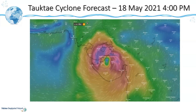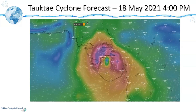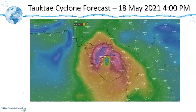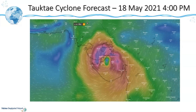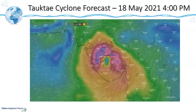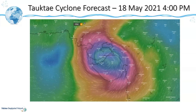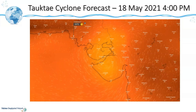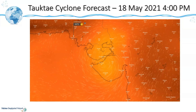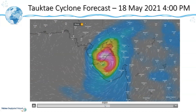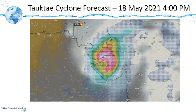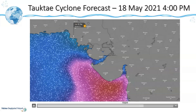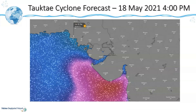Now let's see the forecasted parameters on 18th May at 4 p.m., when the cyclone will be closest to Karachi. As we can see, the wind speed will be 8 knots while the wind gust speed will be 20 knots, and the temperature will be 33 degrees centigrade. There will be no rain, but it will be 65% cloudy, and the ocean tides will have a period of 9 seconds.